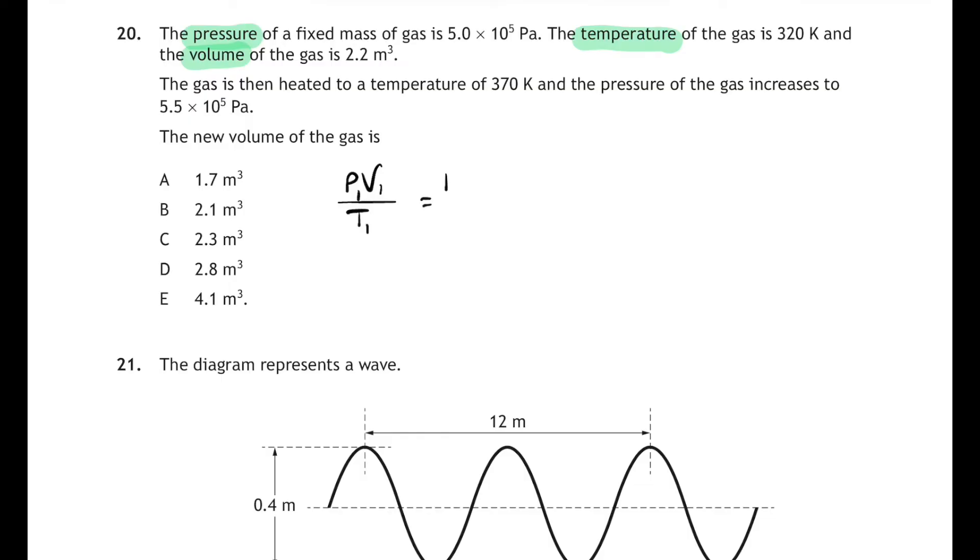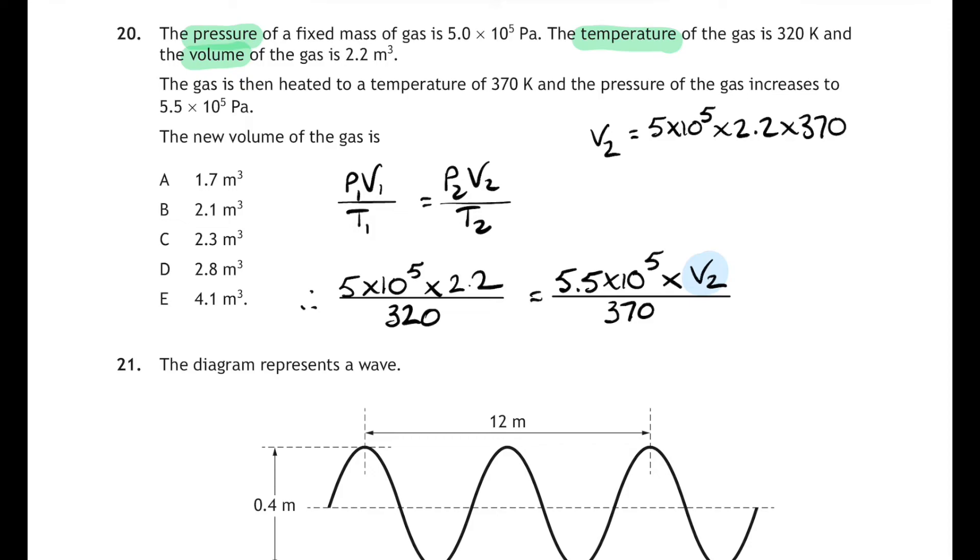p1 v1 over t1 equals p2 v2 over t2, and sub in everything you know. First pressure was 5 times 10 to the 5, the first volume was 2.2, and the first temperature was 320. The new pressure is 5.5 times 10 to the 5, and it's the new volume that we're looking for, divided by the new temperature which is 370. Then we want to rearrange all of this to get v2 as the subject of the equation. Now you could do some partial calculations first, but let's just show you the full rearrangement. So v2 will be equal to 5 times 10 to the 5 times the 2.2 times 370, all over 5.5 times 10 to the 5 times the 320. You can cancel 10 to the 5 top and bottom, and if you do the calculation, you get v2 equals 2.3 cubic meters. Pretty tricky for one mark, but 2.3 cubic meters is answer C.